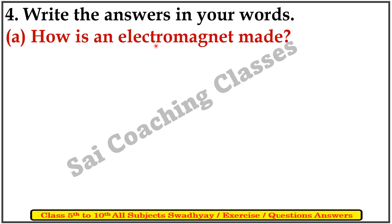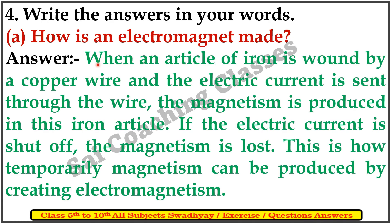A. How is an electromagnet made? Answer: When an article of iron is wound by a copper wire and electric current is sent through the wire, magnetism is produced in the iron article. If the electric current is shut off, the magnetism is lost. This is how temporary magnetism can be produced by creating electromagnetism.